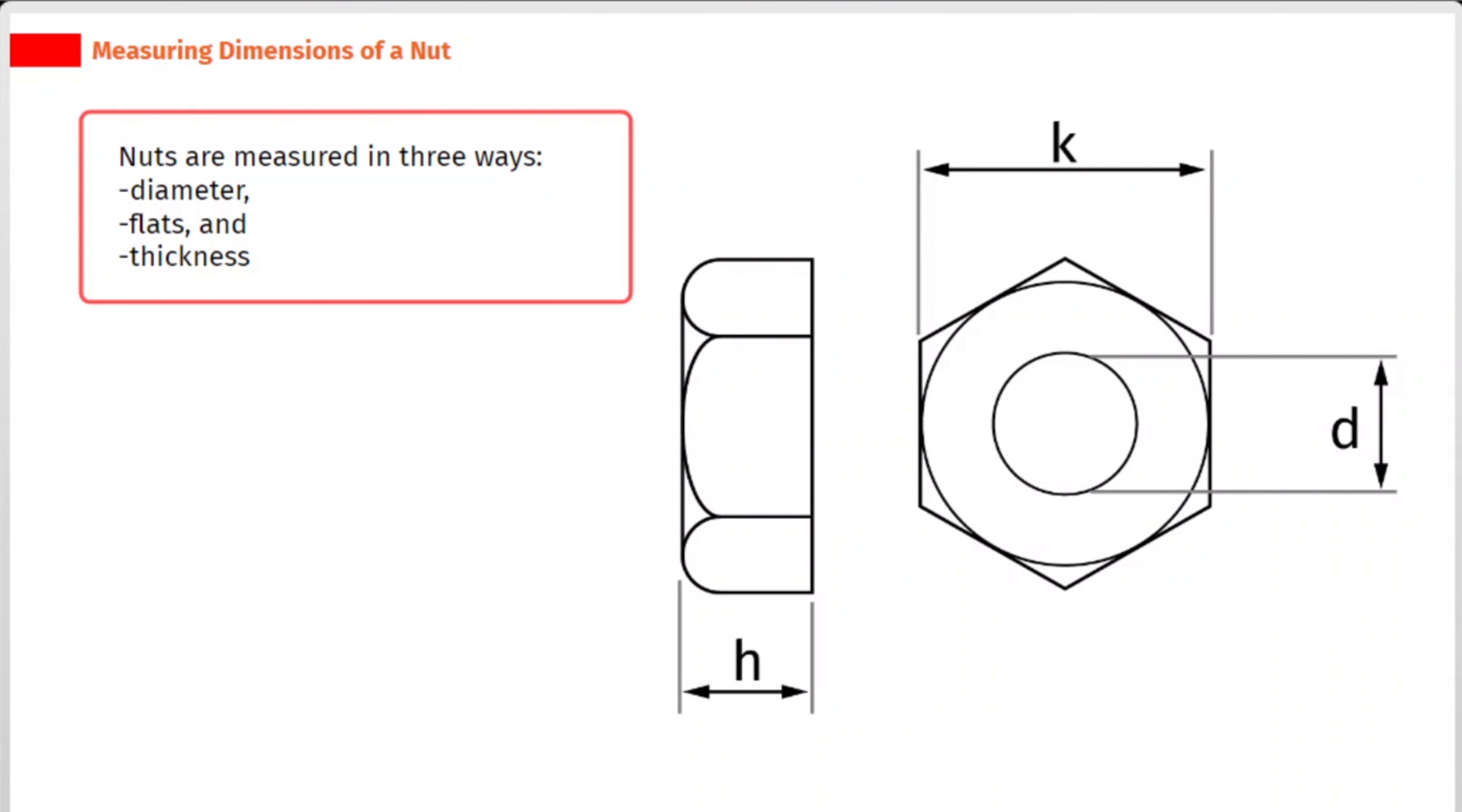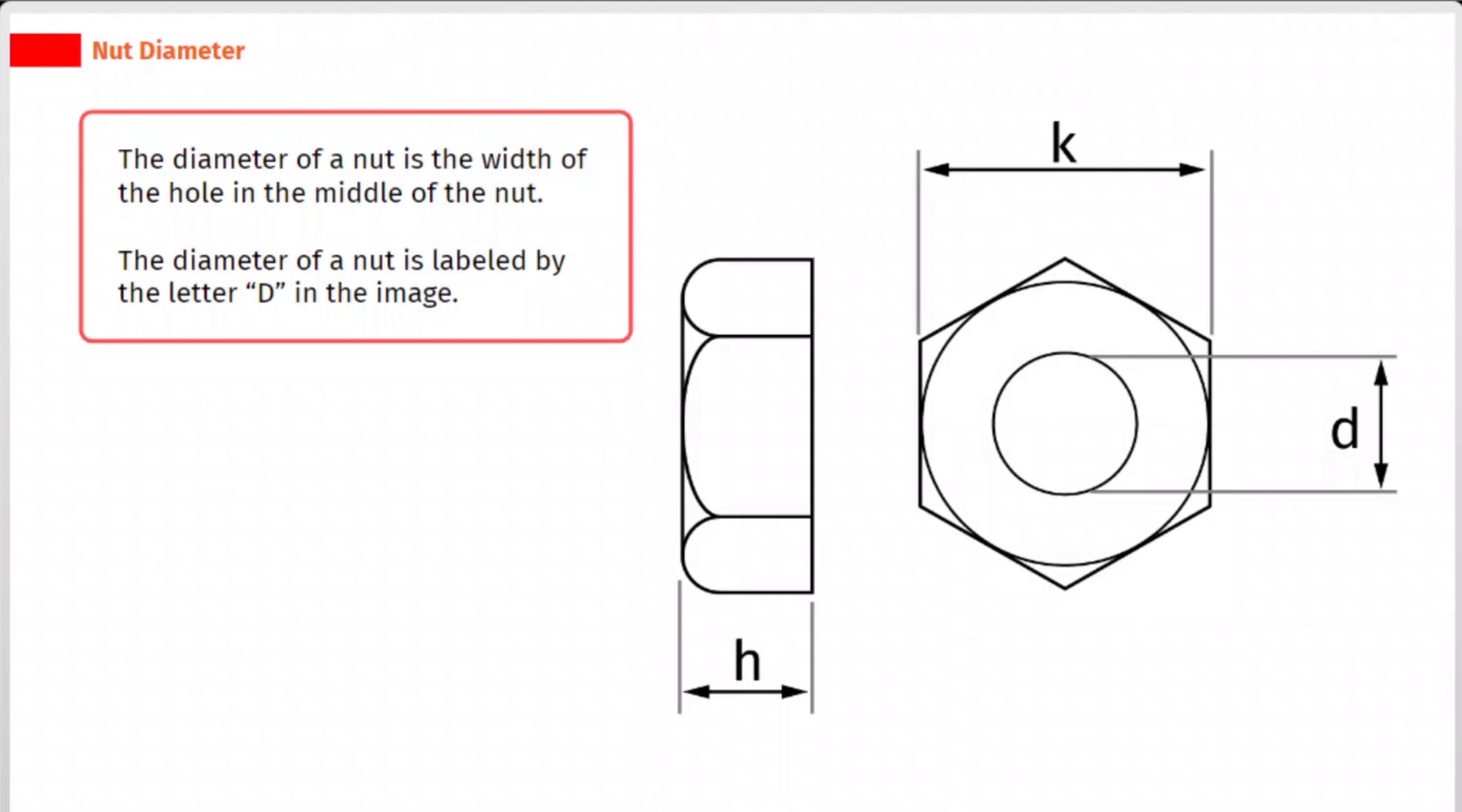Nuts are measured in three ways: diameter, flats, and thickness. The diameter of a nut is the width of the hole in the middle of the nut. The diameter of a nut is labeled by the letter D in the image.